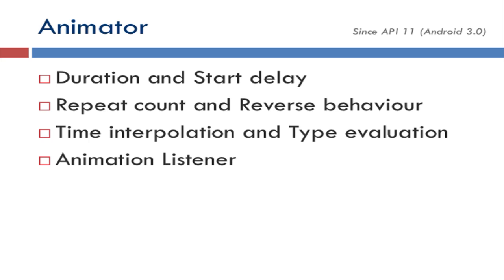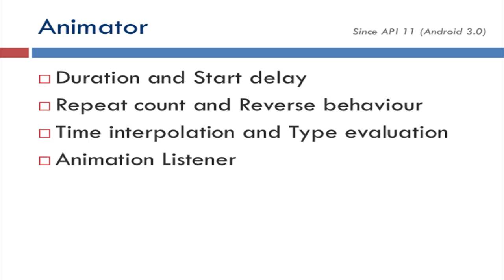First, what are the things we can specify inside the animator? The first is duration and start delay, both in milliseconds. Then we can specify the repeat count — how many times the animation is repeated — and reverse behavior, for example translating from 0 to 500 and then back to 0. Next is time interpolation and type evaluator, which are a little advanced. And the last thing is animation listener, which I will also explain later.